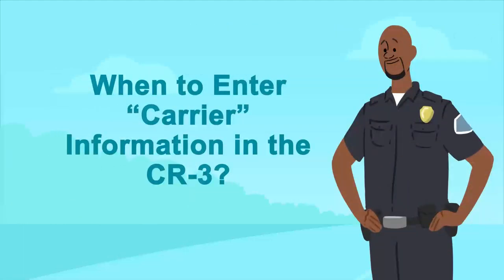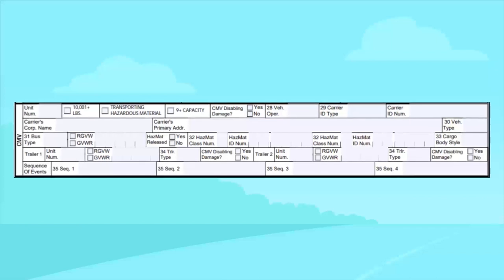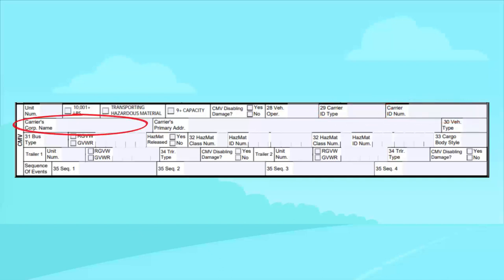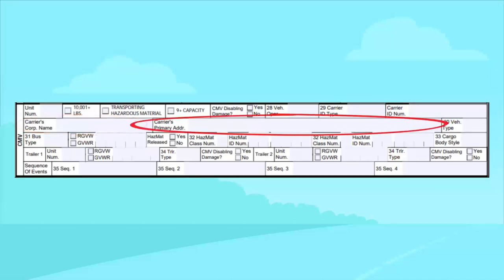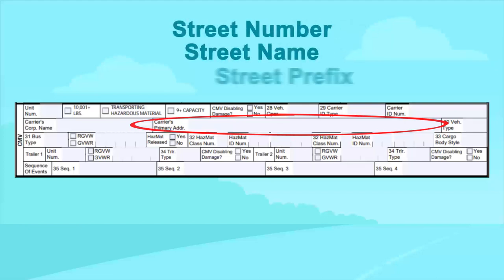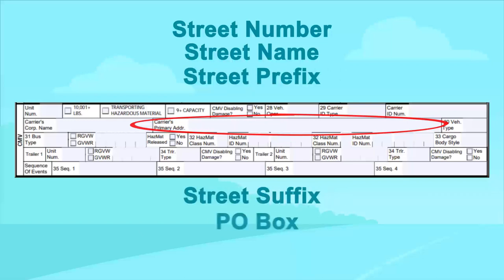When to enter carrier information in the CR3? The carrier fields in the CMV section of the CR3 form record information about the carrier's identification type, identification number, corporate name, and primary address. The primary address field has multiple components, such as the street number, street name, street prefix, street suffix, PO Box, and zip code.